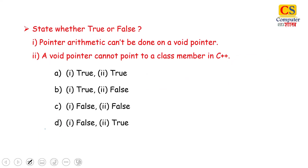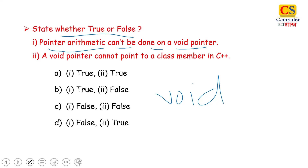Next question: State whether true or false. First statement: pointer arithmetic cannot be done on a void pointer. A void pointer is a pointer with no associated data type — no int, no char, no float. It can hold the address of any variable. Arithmetic on it is not allowed. Second statement: a void pointer cannot point to a class member in C++. This is also true — we cannot use it for dereferencing or any class member or method. So both statements are true, and the right answer is option A.